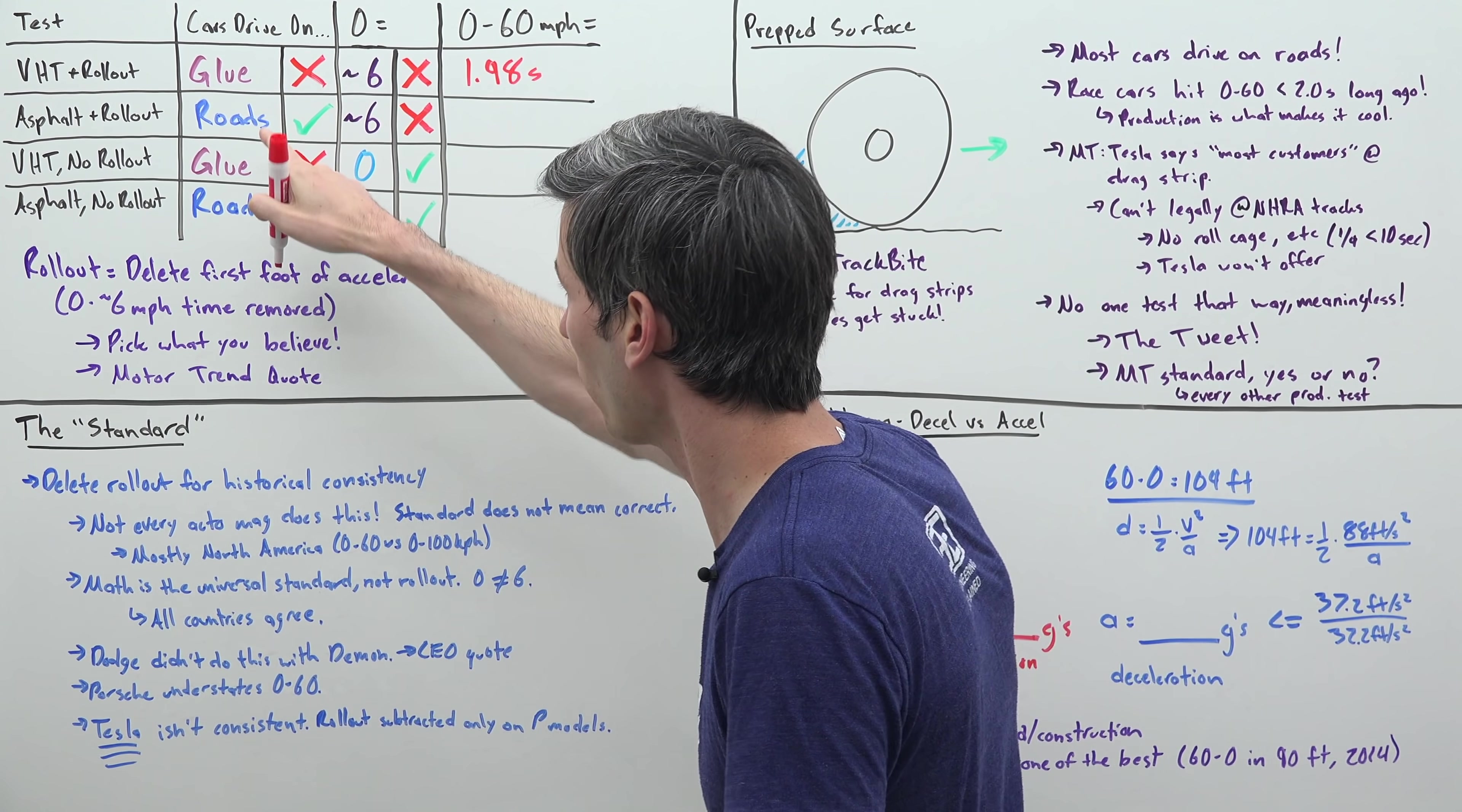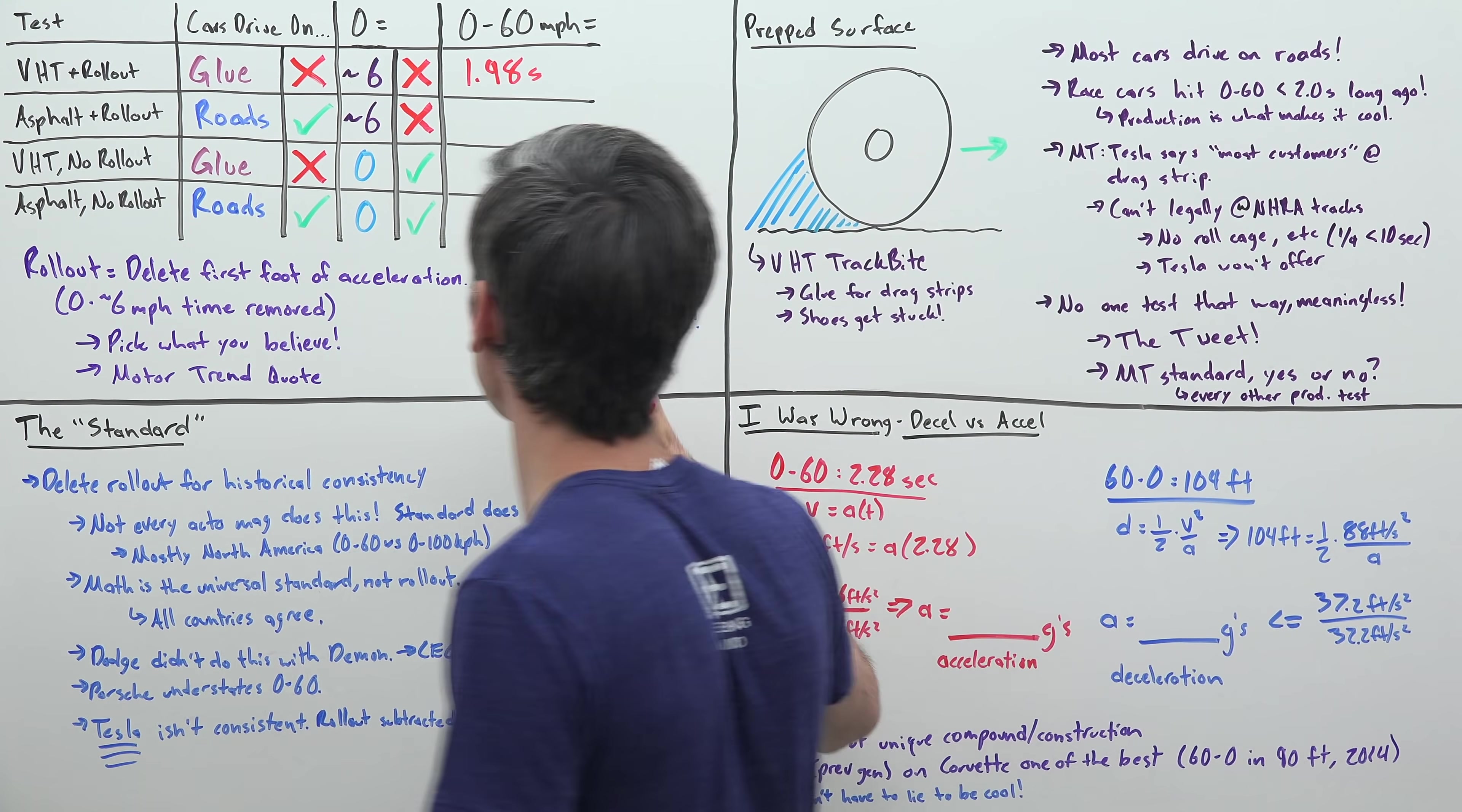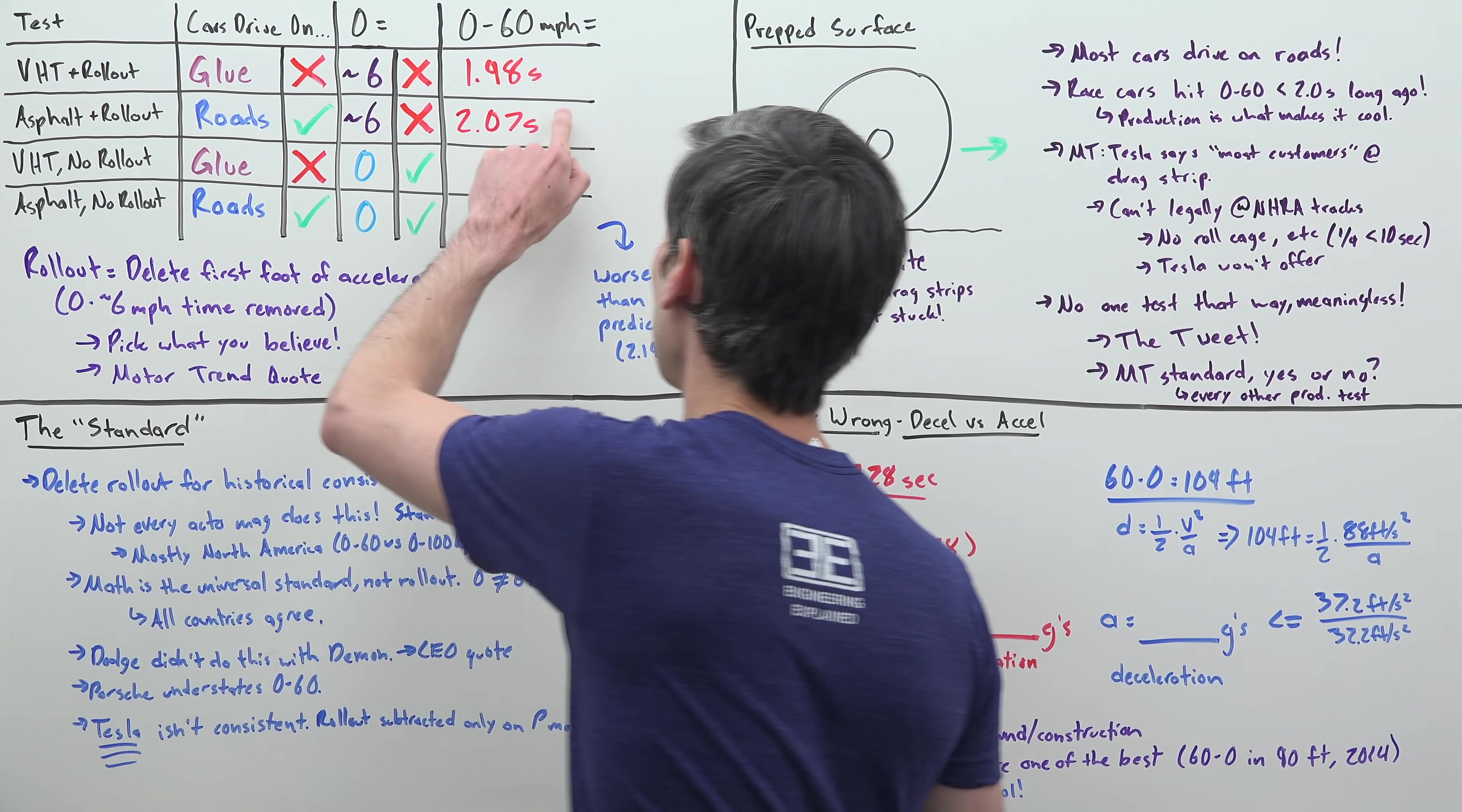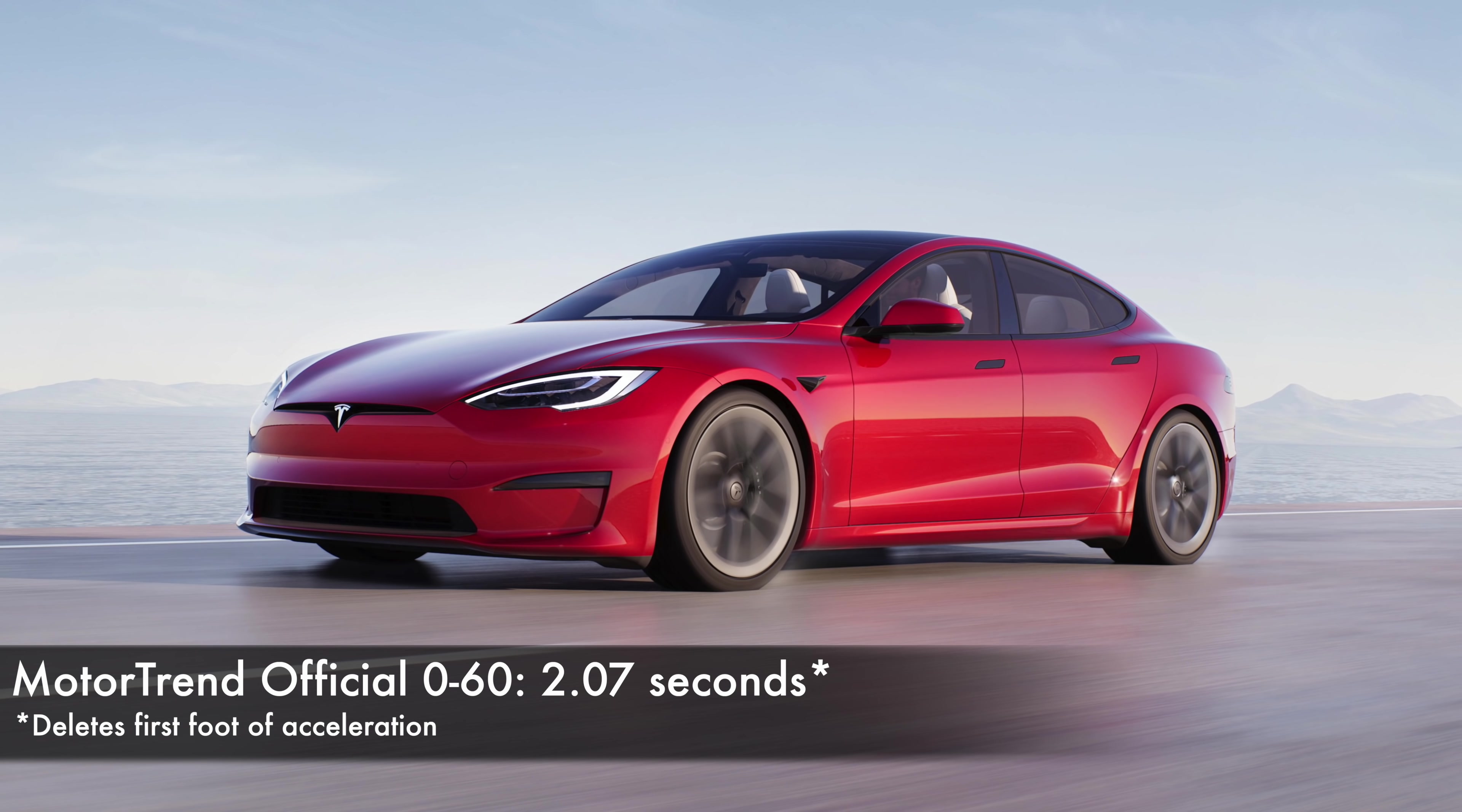If you believe that cars drive on roads and that it's okay to delete that first foot of acceleration, Motor Trend's tested time is 2.07 seconds. So this is the time that Motor Trend would say it did 0 to 60 in, which again is greater than 2 seconds.